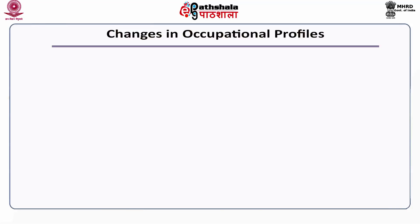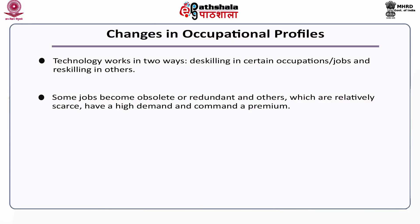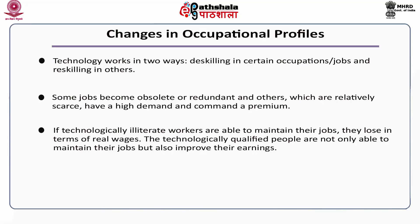But the rapid expansion of telephone booths in every nook and corner of the country has created a million jobs. With regard to changes in occupational profiles, technology works in two ways: de-skilling in certain occupations and re-skilling in others. Some jobs become obsolete or redundant, while others which are relatively scarce command a premium. Technologically illiterate workers who maintain their jobs lose in terms of real wages, while technologically qualified people not only maintain their jobs but also improve their earnings.